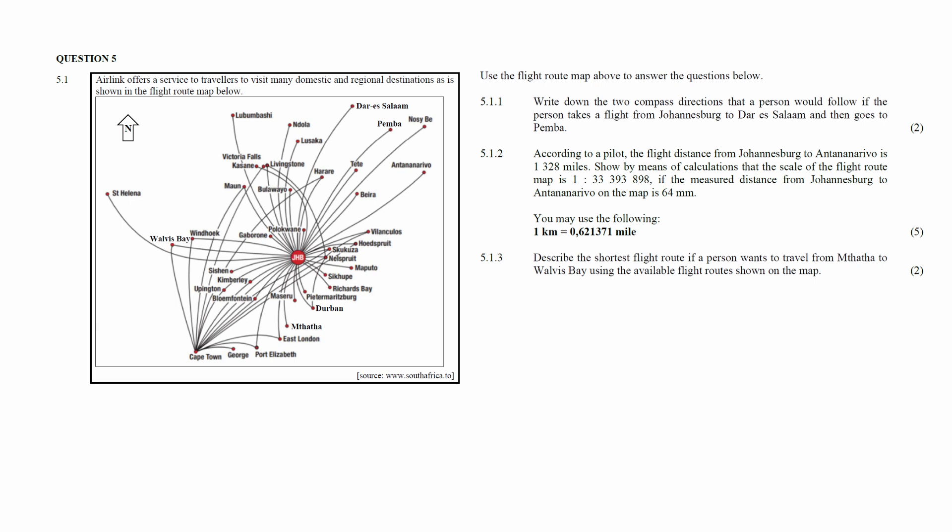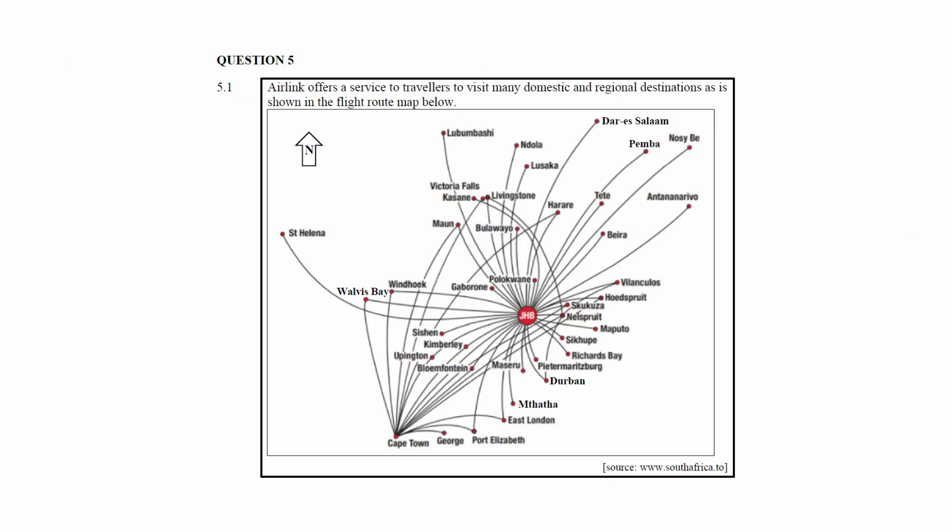Question 5.1 consists of three maps and plans questions designed to assess your understanding of flight route maps, compass direction on maps, and map scales. You are given a scenario where Air Link offers a service to travelers to visit many domestic and regional destinations, as shown on the flight route map.